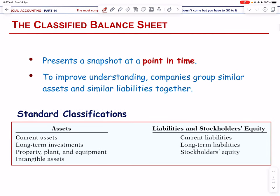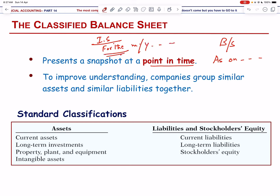A balance sheet presents a snapshot at a point in time. The balance sheet is always stated as 'as on' a specific date. In contrast, the income statement specifies the date as 'for the month or year ending,' covering a specific period of time, whereas the balance sheet represents a specific point in time.